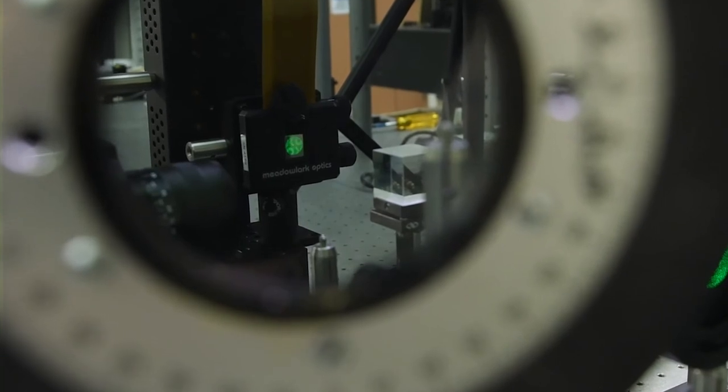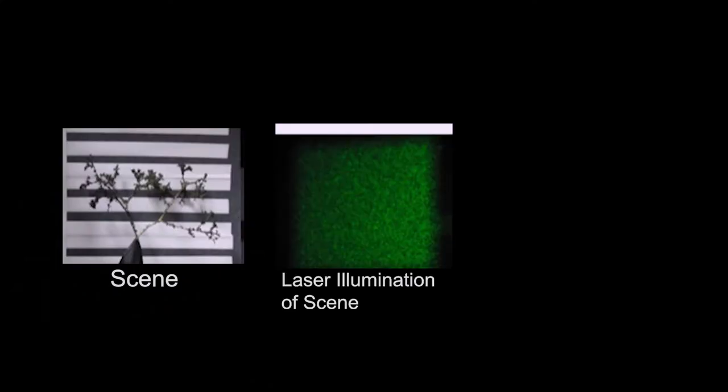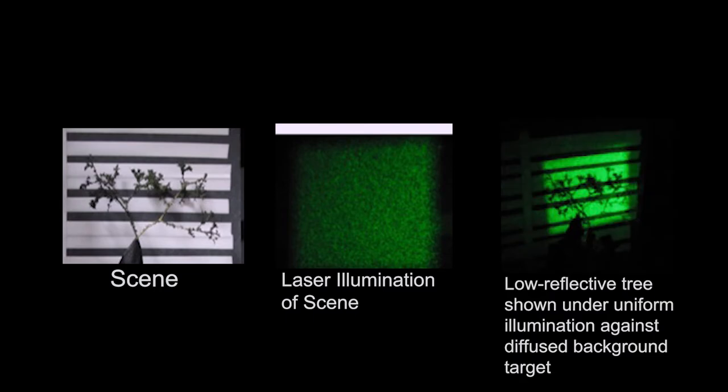And that generates an accurate three-dimensional holographic image of that object, but it projects it right back on the object itself. This is our desired result because now all of the light is going back to the object.